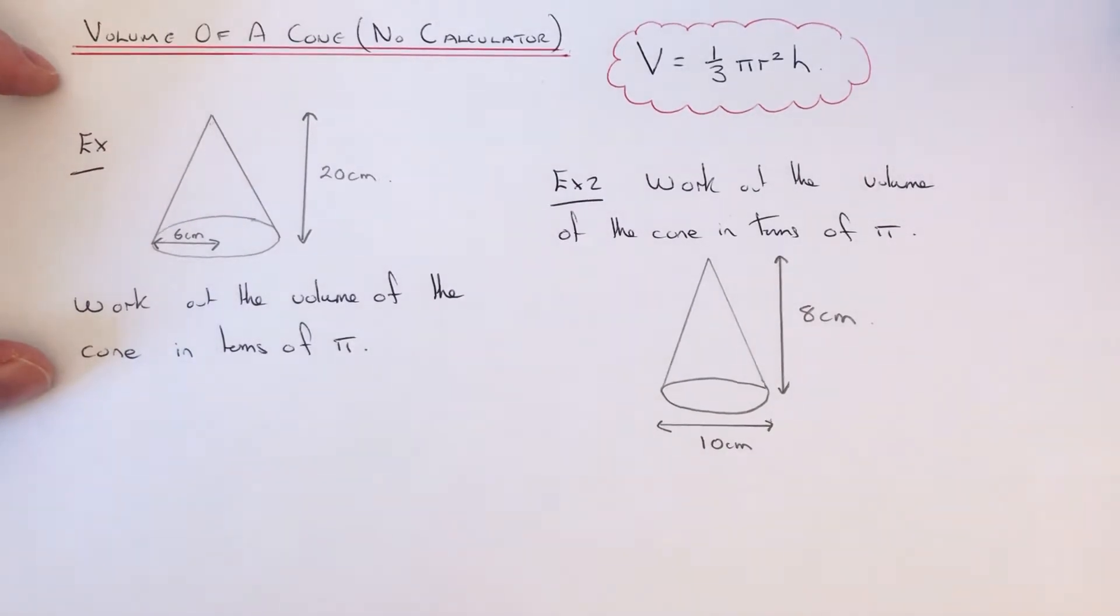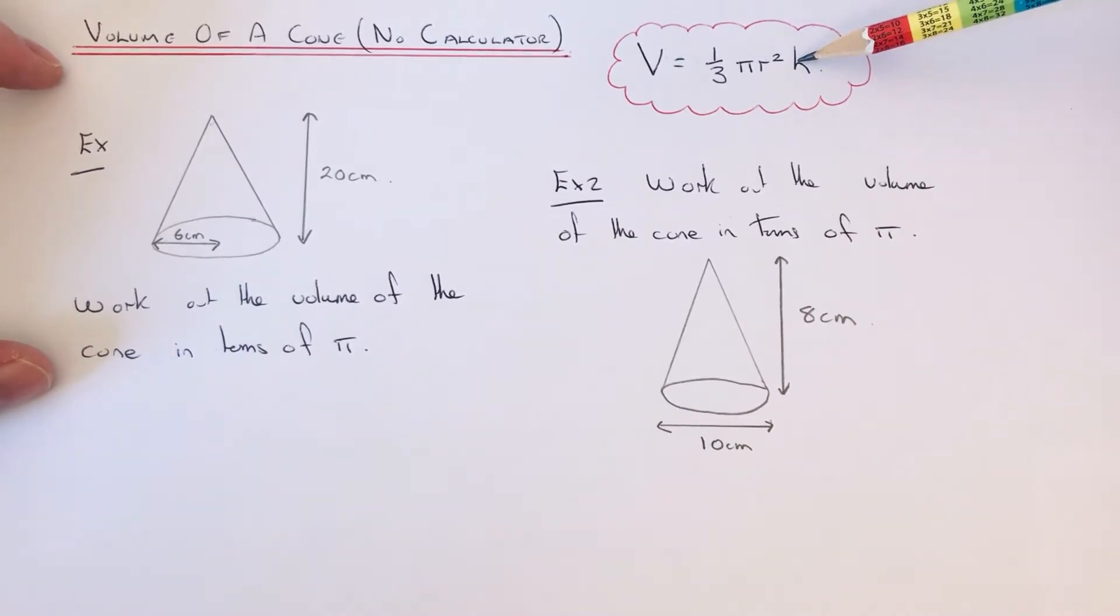The formula that you need to use to work out the volume of a cone is V equals one third pi r squared h. V is the volume, r is the radius, and h is the height of the cone.